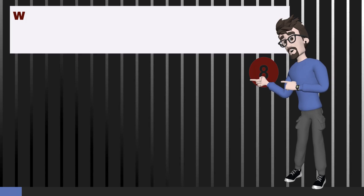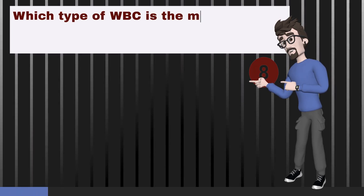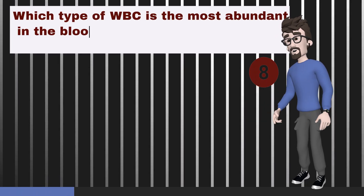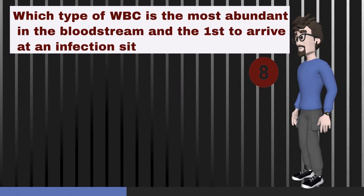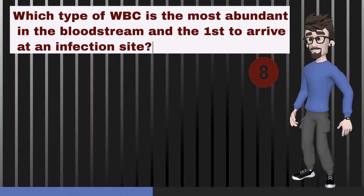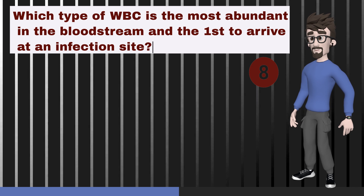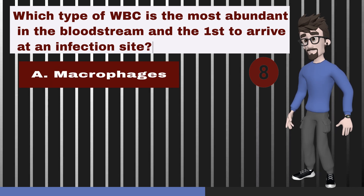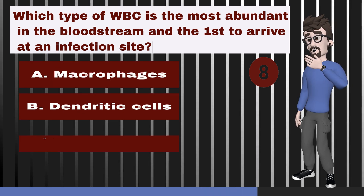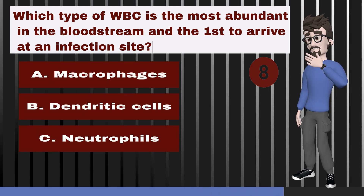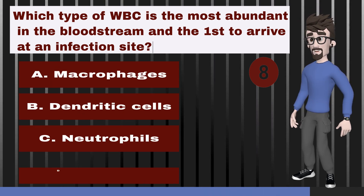Which type of white blood cell is the most abundant in the bloodstream and the first to arrive at an infection site? A. Macrophages. B. Dendritic cells. C. Neutrophils. D. Natural killer cells.